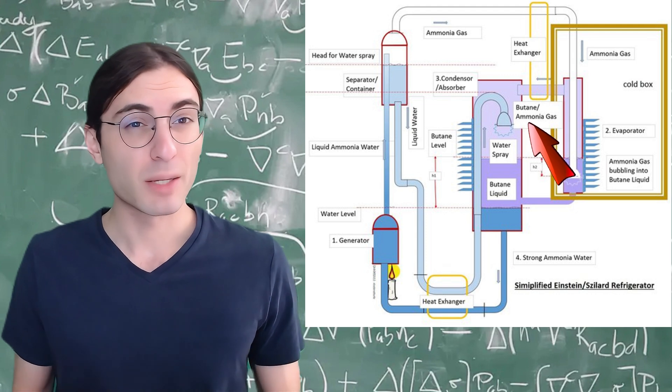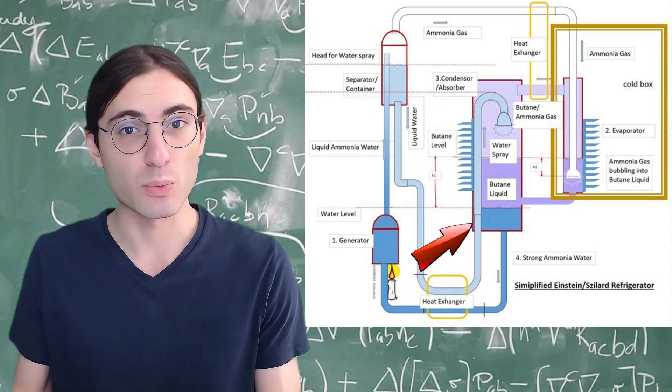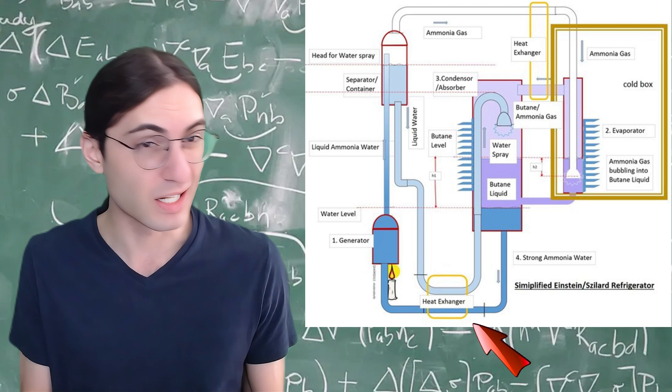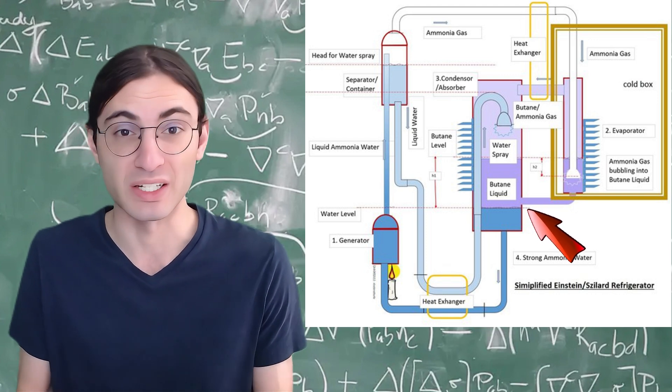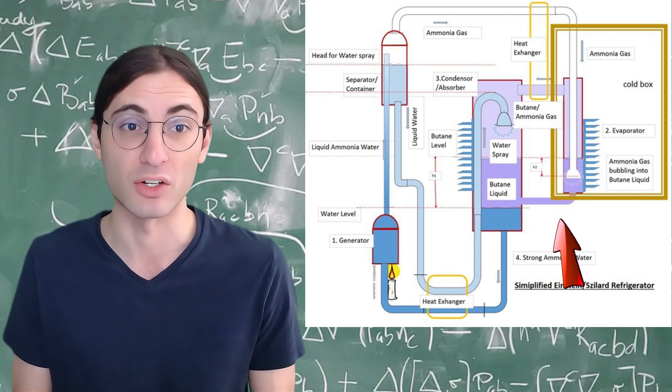Next, that butane-ammonia mixed gas feeds into a condenser where some pre-cooled, ammonia-poor water is sprayed. This water then absorbs the gaseous ammonia, which condenses and sinks to the bottom, feeding back to the heating chamber. The butane, now being the majority again, having high partial pressure, recondenses, releasing heat. This heat is then dumped to the environment, and the liquid butane is then fed back to the evaporating chamber.